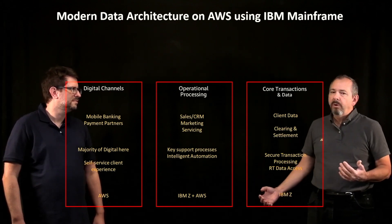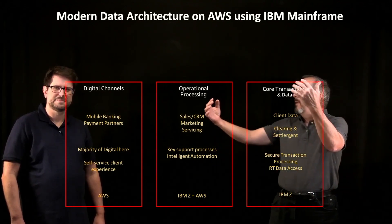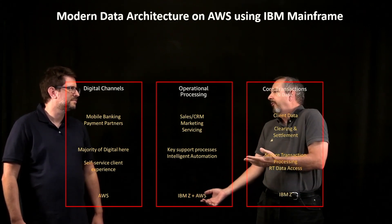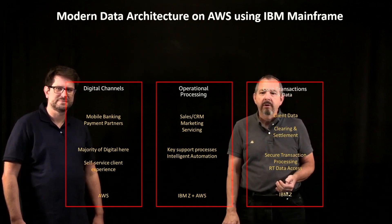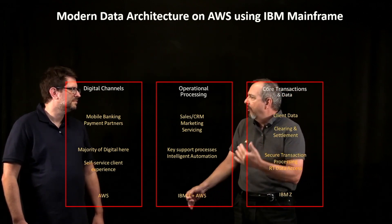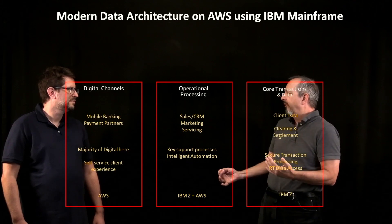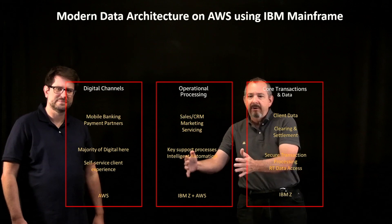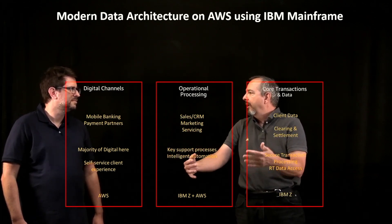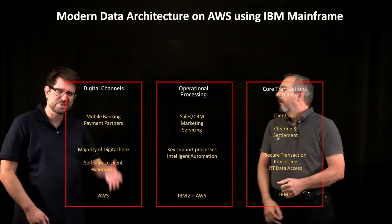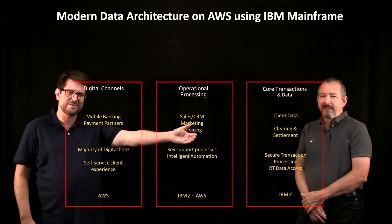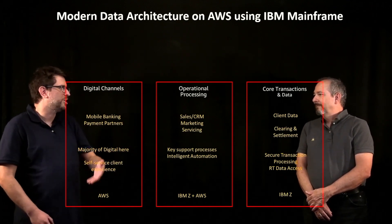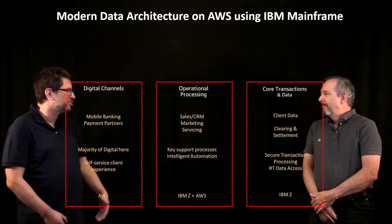So in this hybrid world, there's a set of things in the middle — operational things: clearing, sales CRM stuff, servicing, things like credit cards. There are opportunities here for improving management processes and intelligent automation. This is the place we talk about a modern data architecture in a hybrid environment, IBM Z and AWS working together. This is what we're going to cover today: how you can bring the data from IBM Z to AWS and use that data with your digital channels, your cloud-native applications, your analytics.